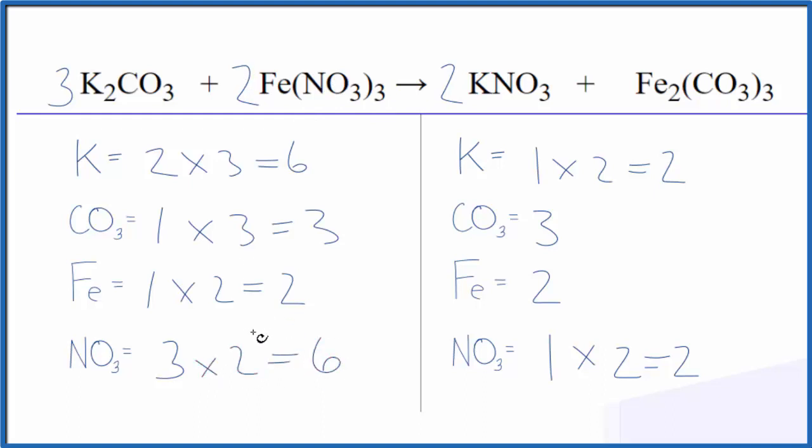We're getting close though, because now we could fix the nitrates here. We need to have six, so we could change this two to a six. That would change our potassiums as well. So one times six, that gives us six of the potassiums, one nitrate times six, six of those. And we're done. This equation is balanced.